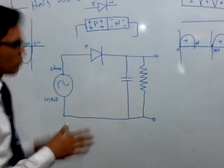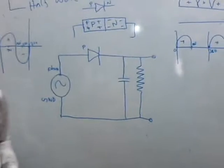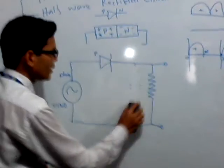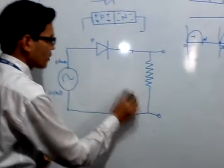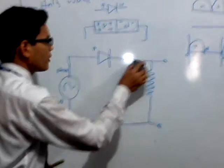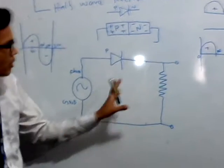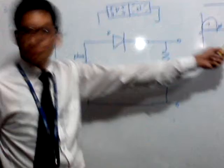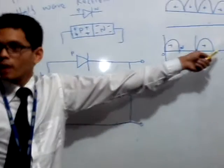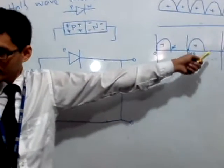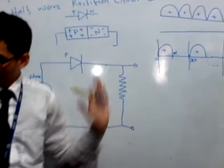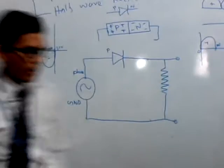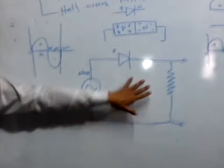For now, forget about the filter circuit, because filtration is not part of the rectification. We will add the filter circuit later. First we convert AC — this wave shape — into the rectified wave shape. Then we will remove the AC component from it to make it pure DC. Now our circuit is complete.